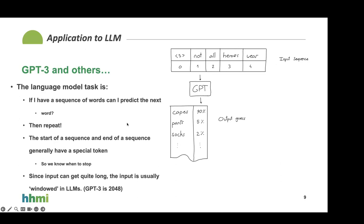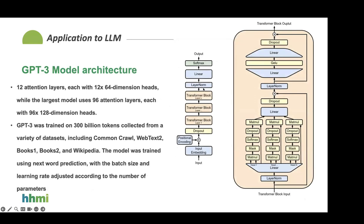The actual GPT-3 model architecture follows the same structure we looked at. The matrix multiplications are the same self-attention as before, with an added dropout layer. There's a linear layer to concatenate heads in parallel, another normalization, and they found that upsampling with a linear layer using a GLU instead of a ReLU worked better. Then they collapse dimensionality back down, apply dropout, and produce the output.